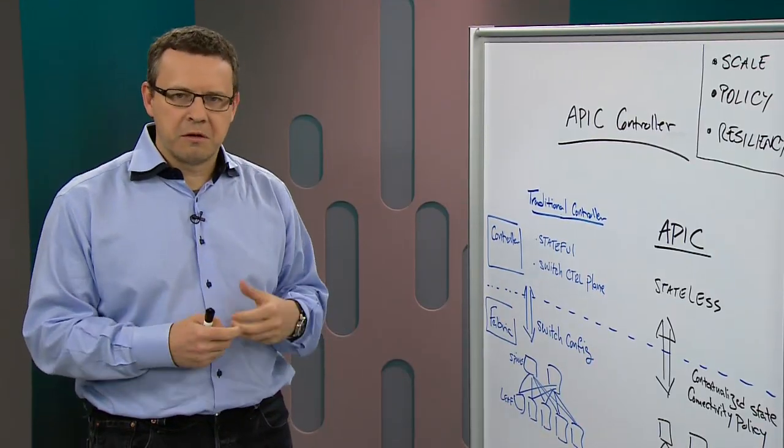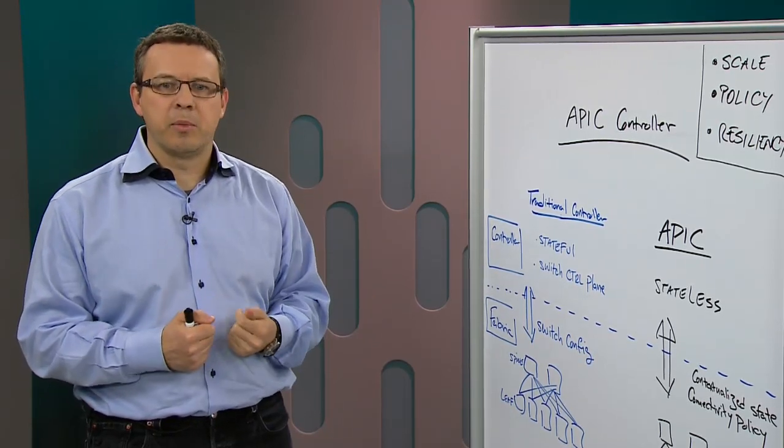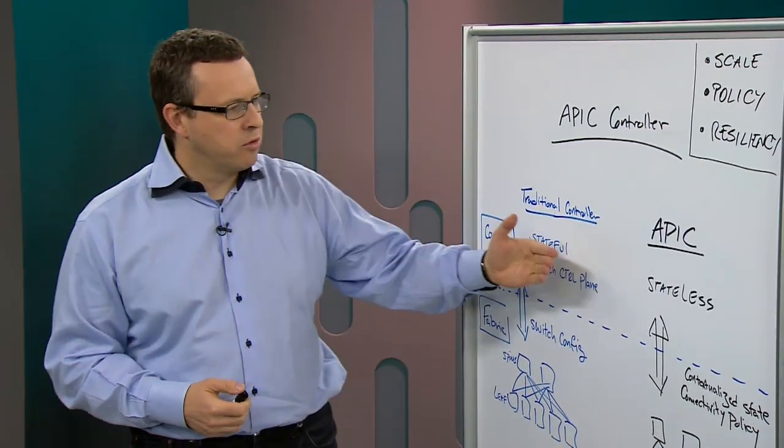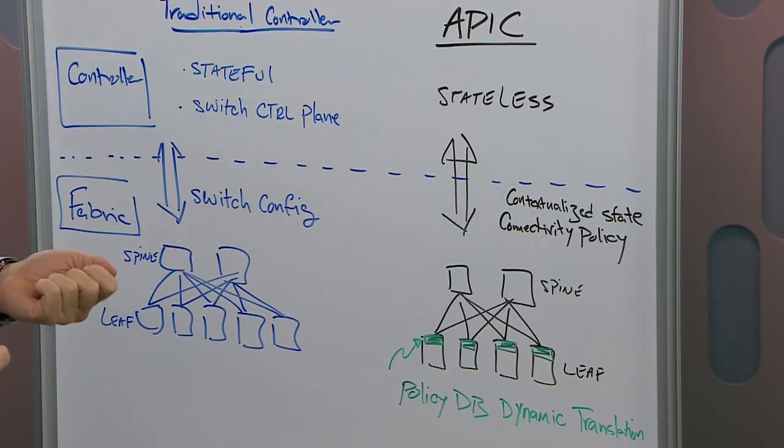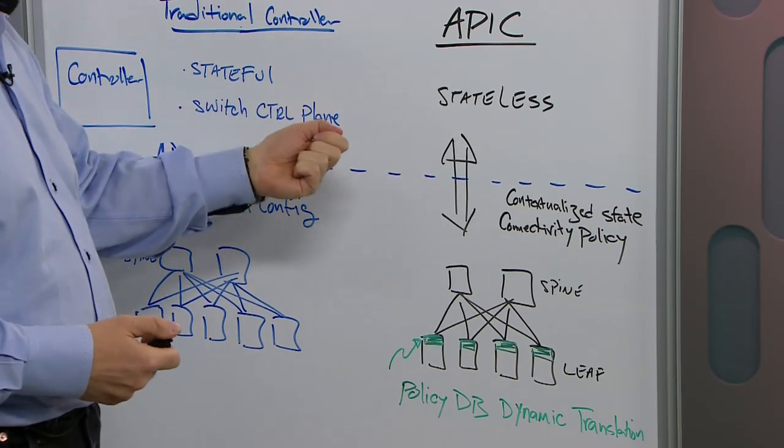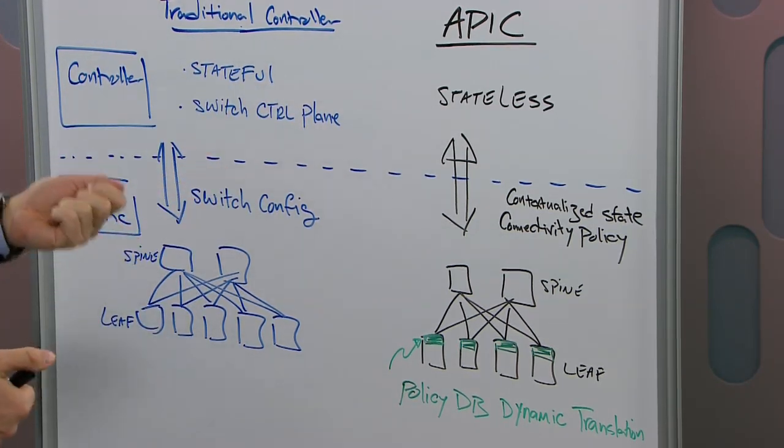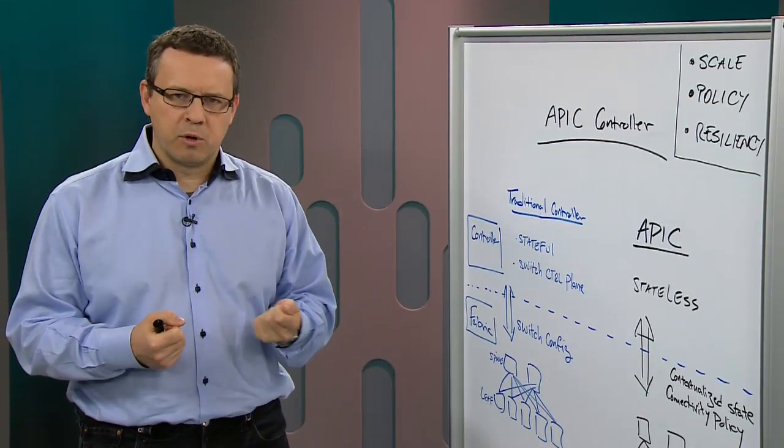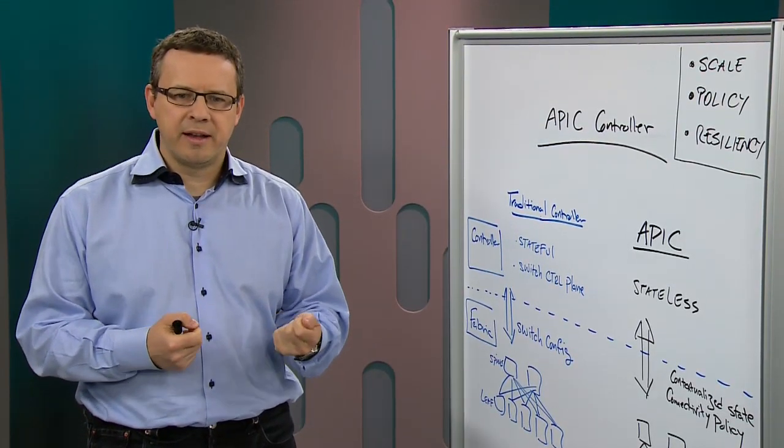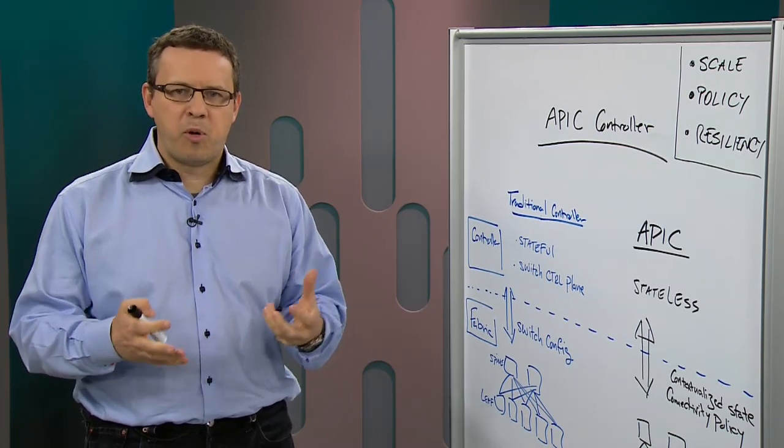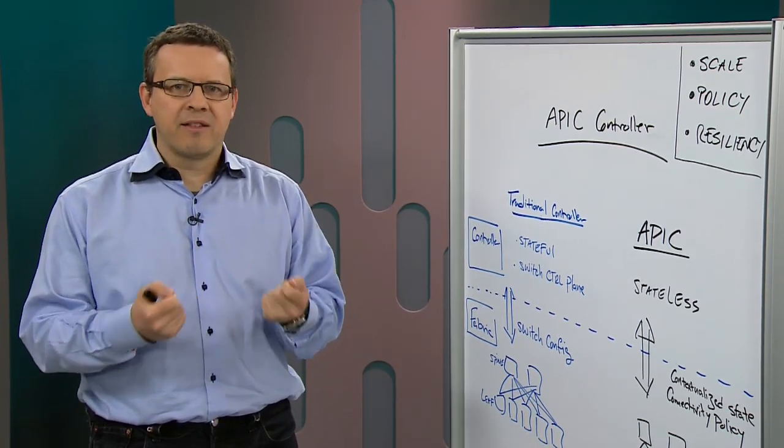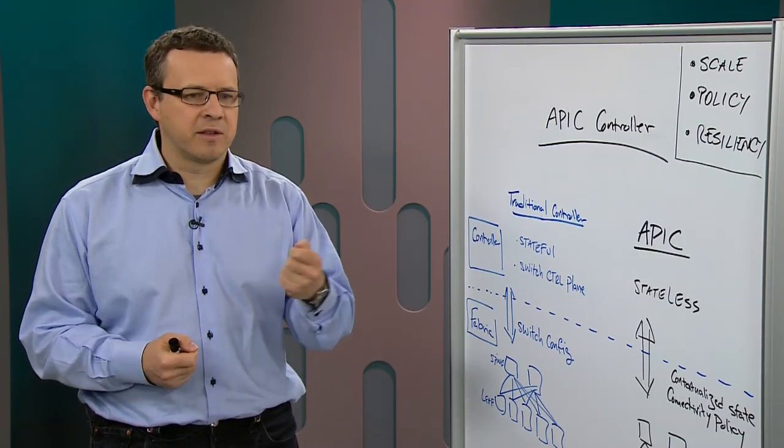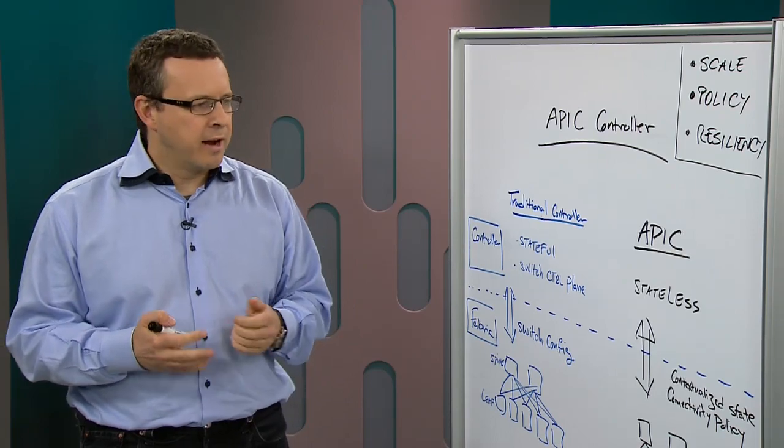So what's different with the APIC? The main point is at the controller level, we actually don't have stateful configurations. We only have stateless configuration. We call these policies and profiles. What we have is basically a description of what we call application network profiles. It defines the connectivity graph of points and who can talk with whom. That has nothing to do with what the switch configuration is for the individual switches. It's literally just a set of endpoint groupings and who can talk with whom.